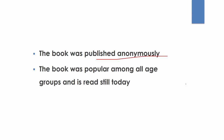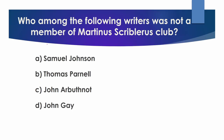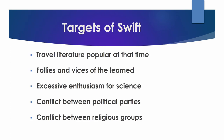Before I proceed further, I want to ask a question. In my last video on Jonathan Swift, I told you how Swift had become friends with the prominent literary figures of his time and became a member of the Scriblerus Club. If you want to know more about the Scriblerus Club, you can watch my video — the link is in the description and also in the info button. Now the question is: who among the following writers was not a member of the Scriblerus Club? I will tell you the answer at the end of the lesson.